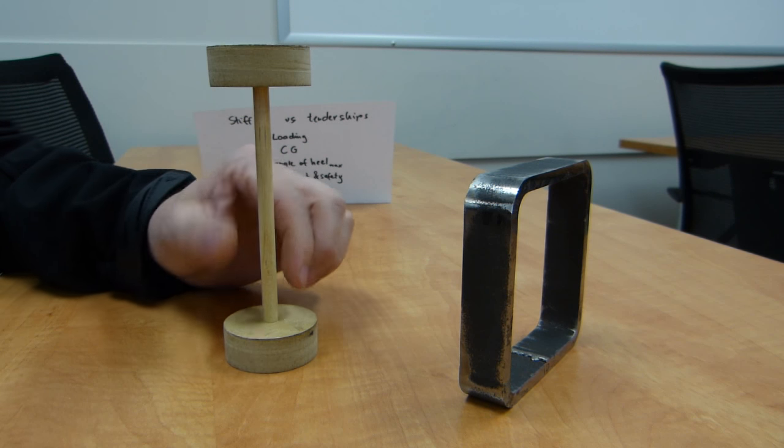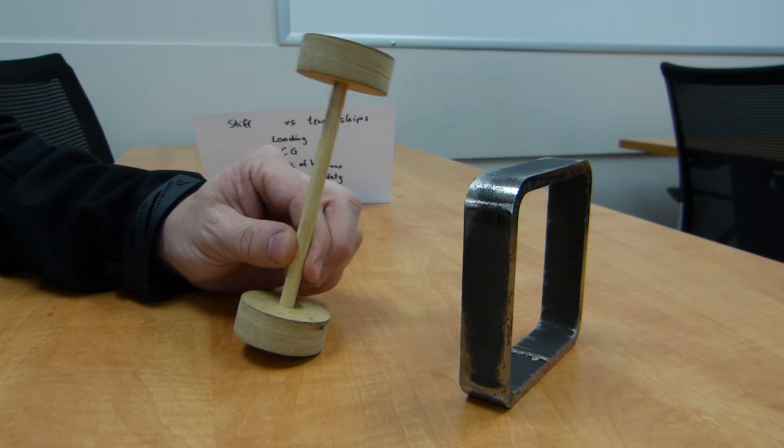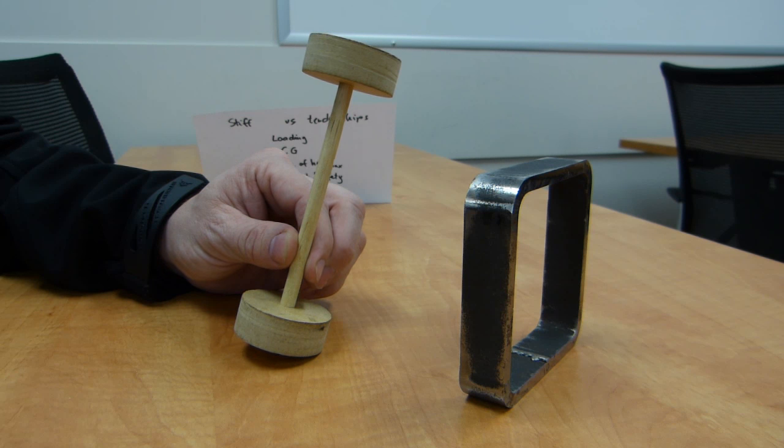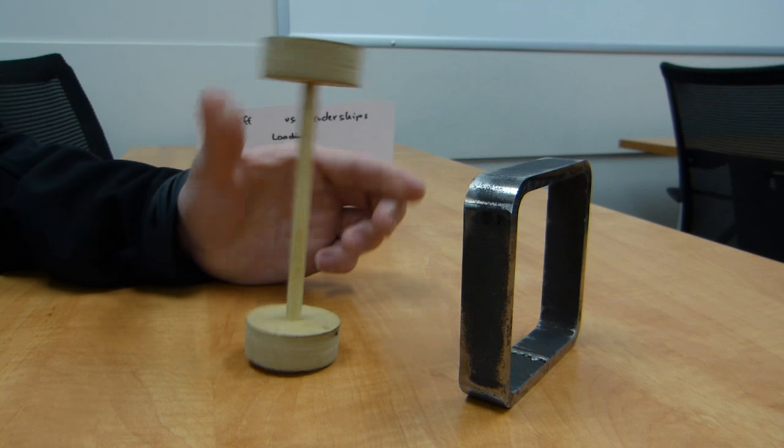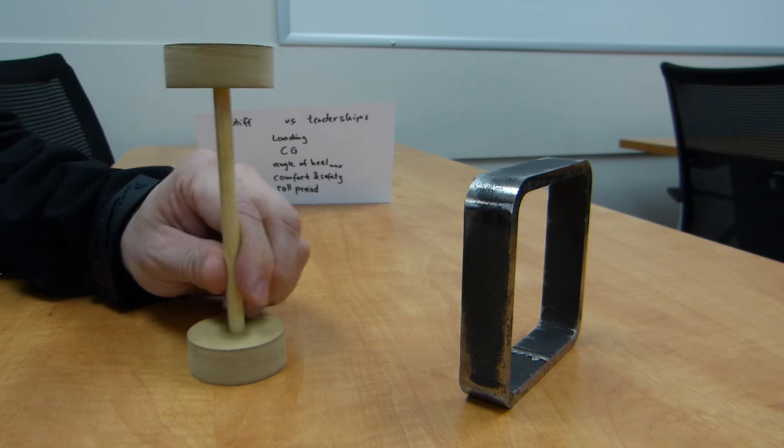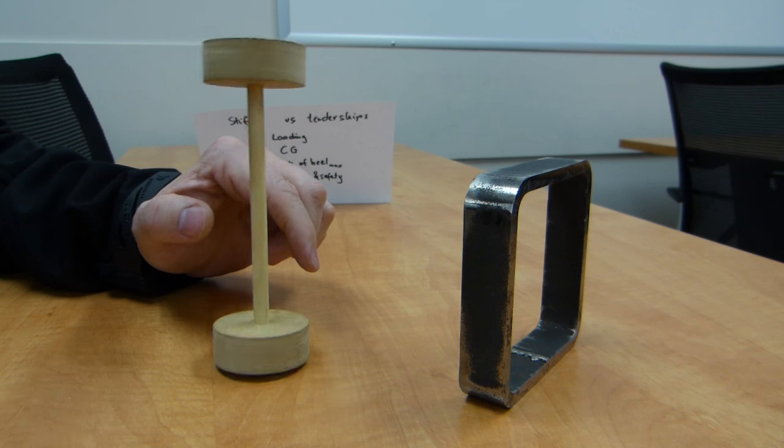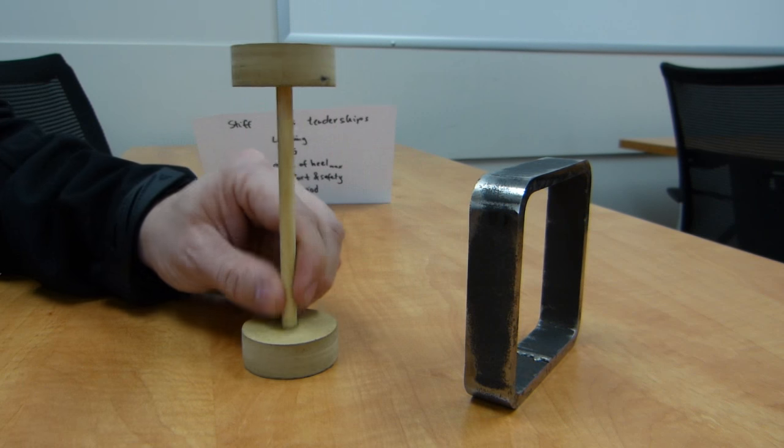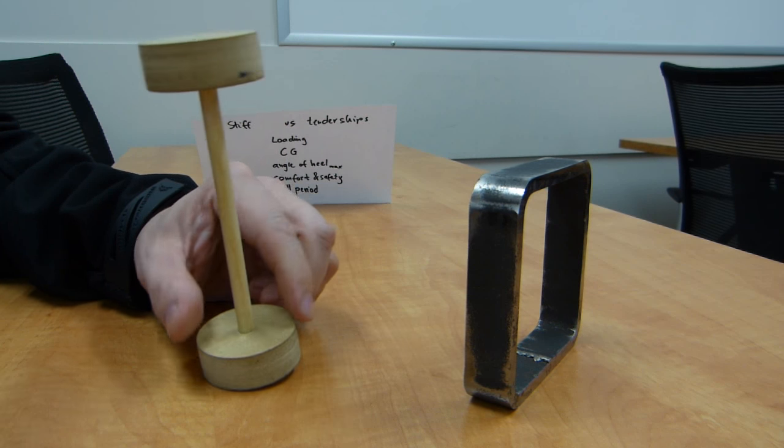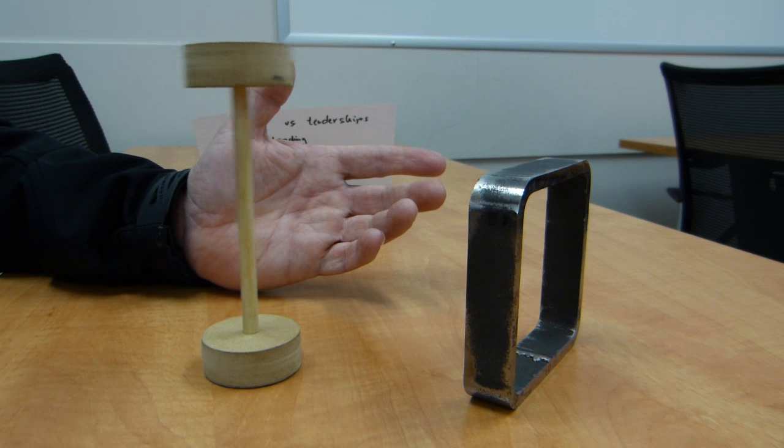Angles of maximum heel. On a tender ship, the angle of maximum heel is a lot less. Say, from about this angle here, and you can put a protractor on your screen, it falls over. So, it only balances within a narrow range there, within a narrow range of port and starboard angles.